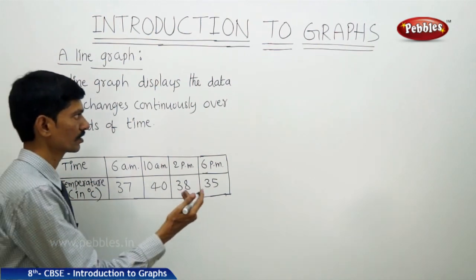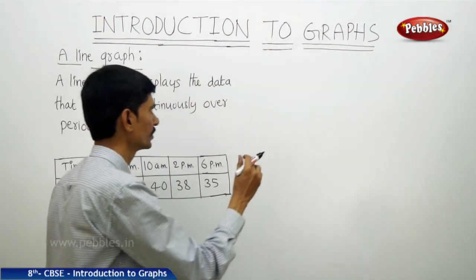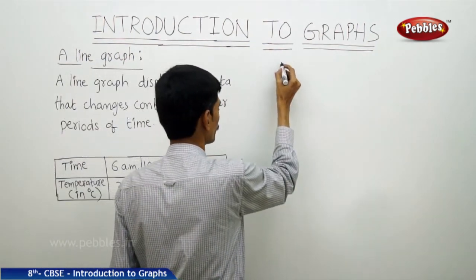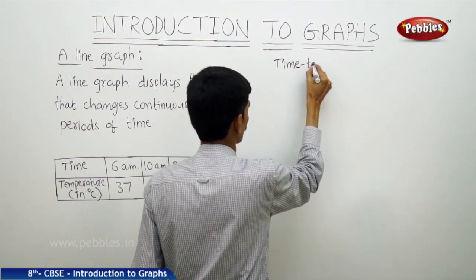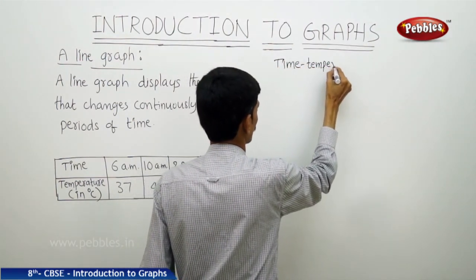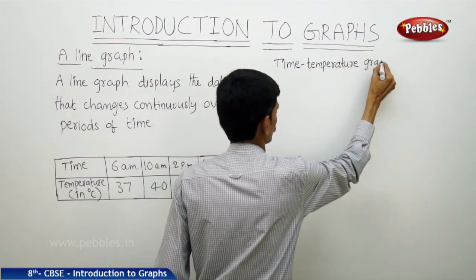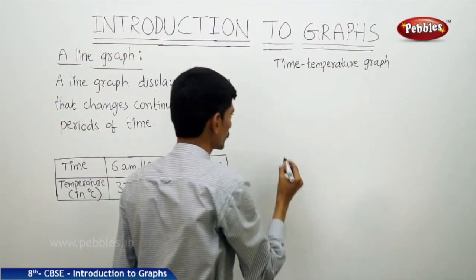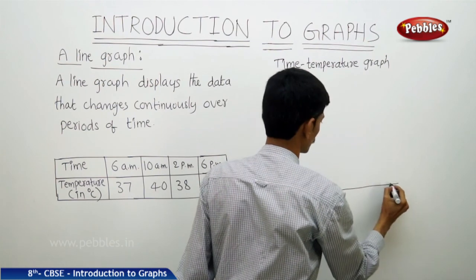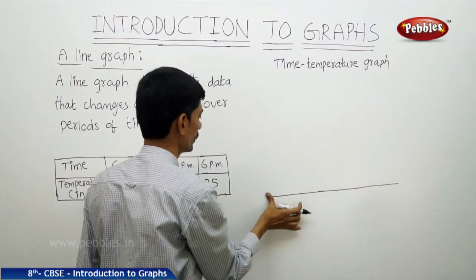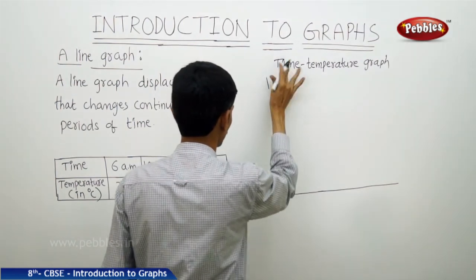Let us draw the graph. This is the time and temperature, so this graph is known as the time-temperature graph. We will take a horizontal line, which is also known as the x-axis, and a vertical line, which is also known as the y-axis.